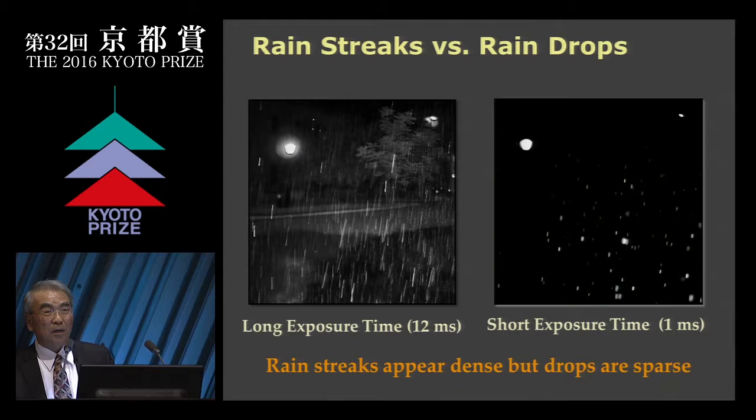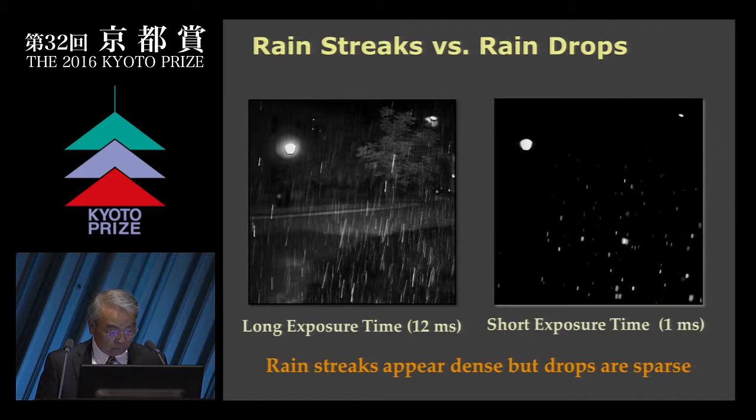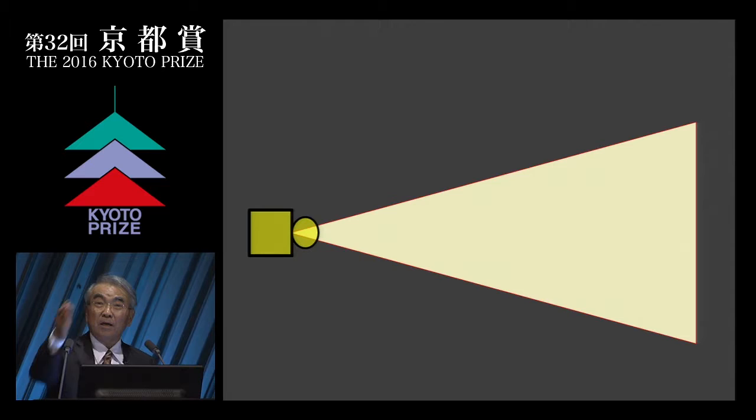First of all, the speed of the raindrops is not so fast. The diameter is about 10 mm, so the speed is maximum 10 meters per second, which is a likely figure. We have the slow speed of response. But if you have a very short exposure — one millisecond, one thousandth of a second — then we can see the raindrops. We can identify in which position or location the raindrops are.